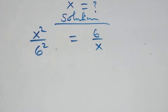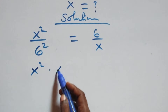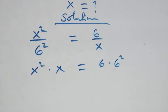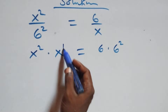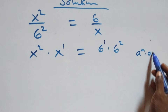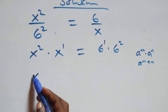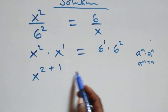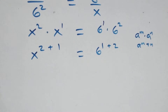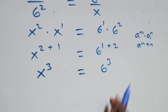The next step: we cross multiply. x squared times x equals 6 times 6 squared. We have x raised to the power 1 and 6 raised to the power 1. When we have e raised to the power n times e raised to the power n, we get e raised to the power n plus n. So we have x raised to the power 2 plus 1 equals 6 raised to the power 1 plus 2, which gives x cubed equals 6 cubed.